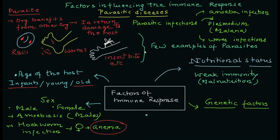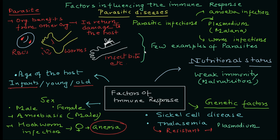The fourth factor is genetic factors, which are also responsible for susceptibility to infection. For example, patients with sickle cell disease or thalassemia — both genetically related disorders — are resistant to Plasmodium falciparum infections. Plasmodium falciparum causes falciparum malaria, one of the most dangerous forms. There are four types of malaria agents: Plasmodium vivax, Plasmodium malariae, Plasmodium ovale, and Plasmodium falciparum. Sickle cell disease patients are resistant to P. falciparum.